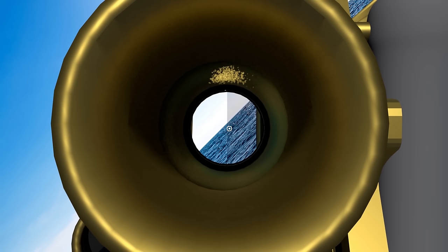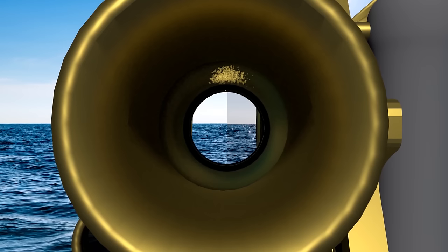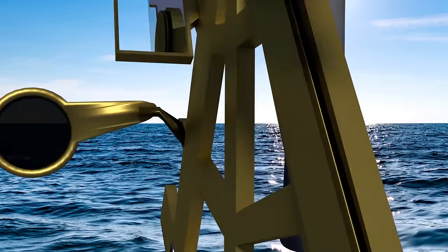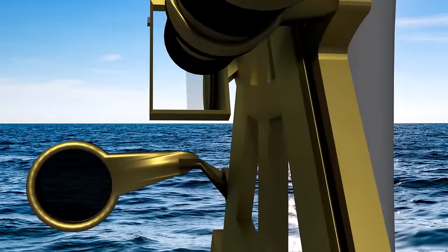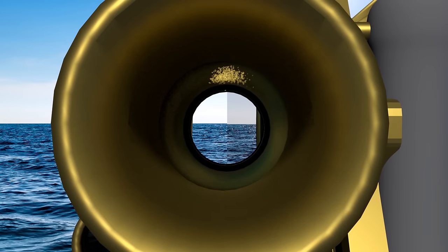Then, any residual index error will have to be removed mathematically. You effectively measure that final little bit of index error by using the micrometer drum to make the horizon continuous. Then, any measurement you take will need to have that index error applied to them.